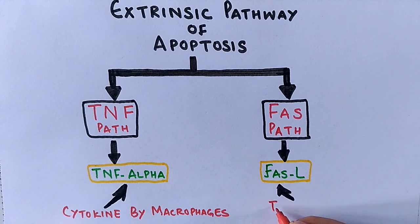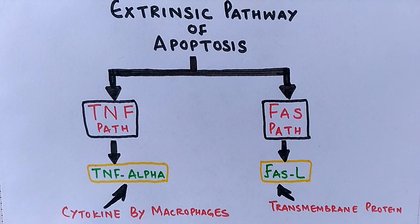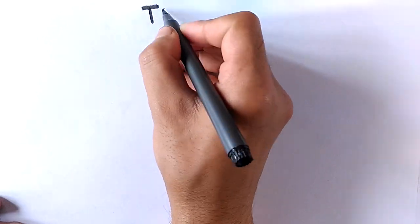The FAS ligand is a type 2 transmembrane protein that belongs to the tumor necrosis factor family. Now let's first discuss the TNF path in detail.